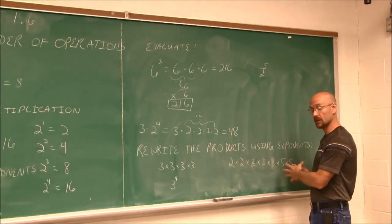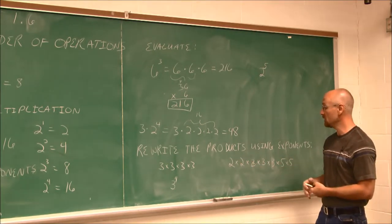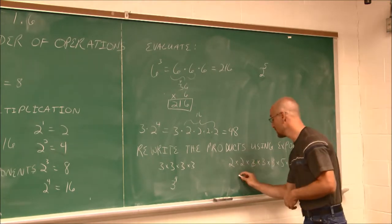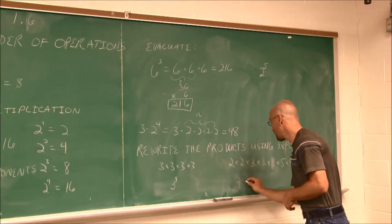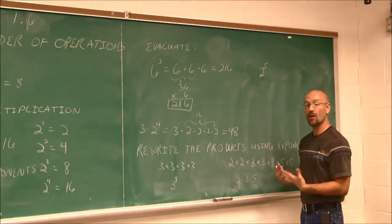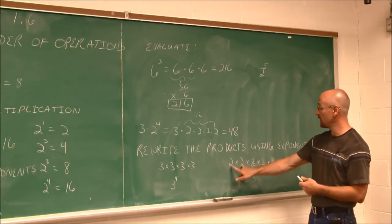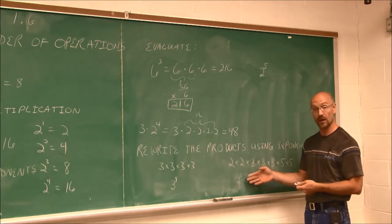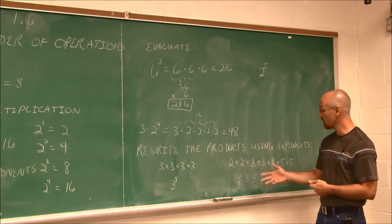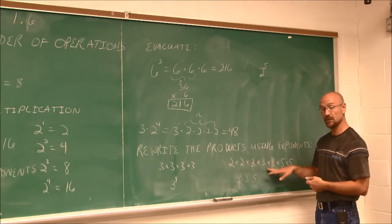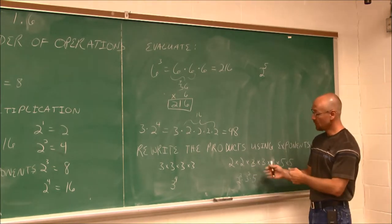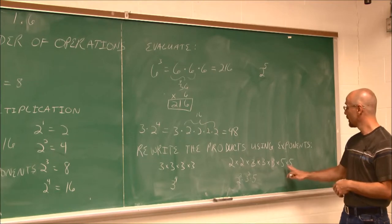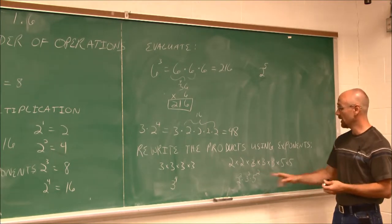What if we have multiple factors? First, identify the base of each one. Here I have 2's, 3's, and 5's. To rewrite using exponents: I have a base of 2 multiplied by a base of 3 multiplied by a base of 5. Now introducing the exponents — how many factors of 2? Two factors of 2, so that's 2 squared. We can also say 2 to the second power. There are three 3's, so 3 to the third, which we can also call 3 cubed. And there are two 5's, so 5 squared.